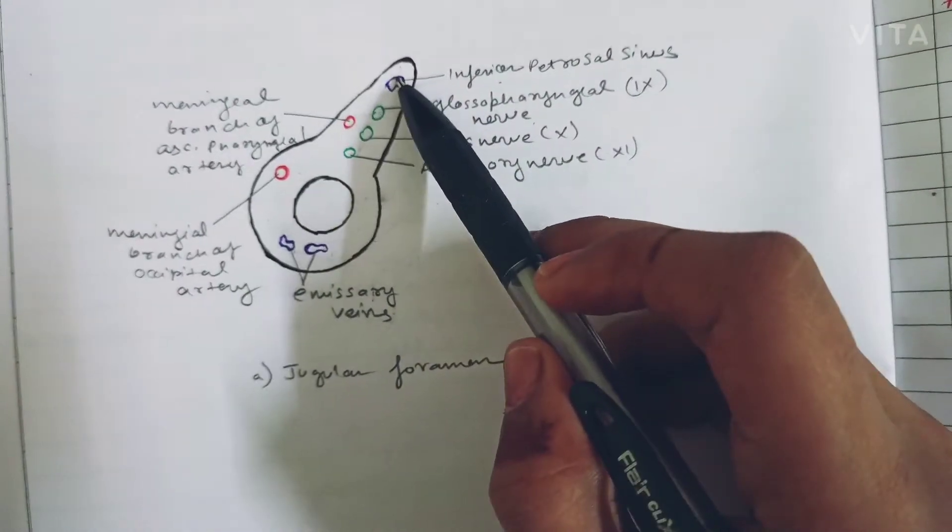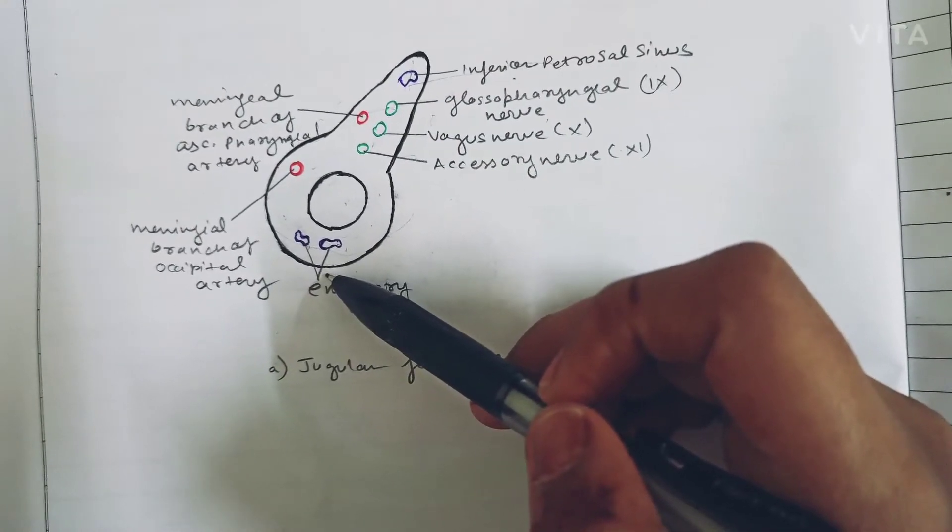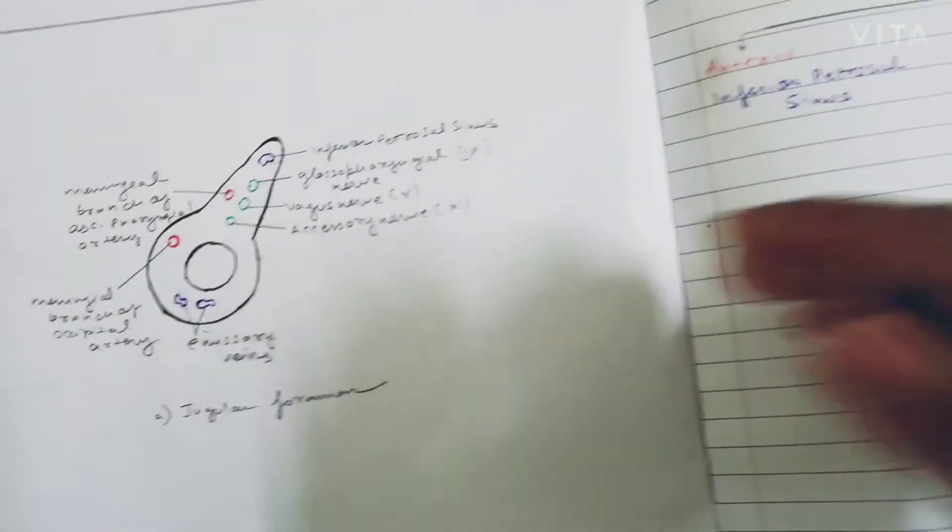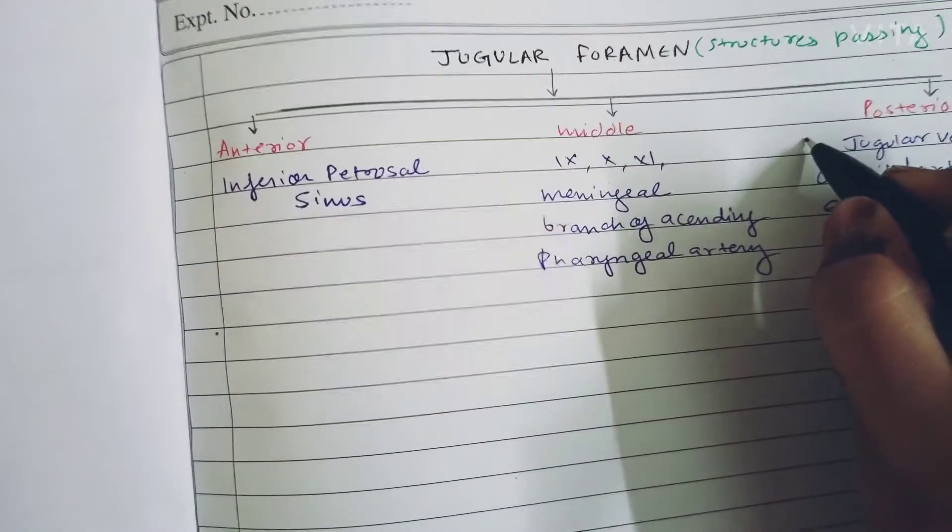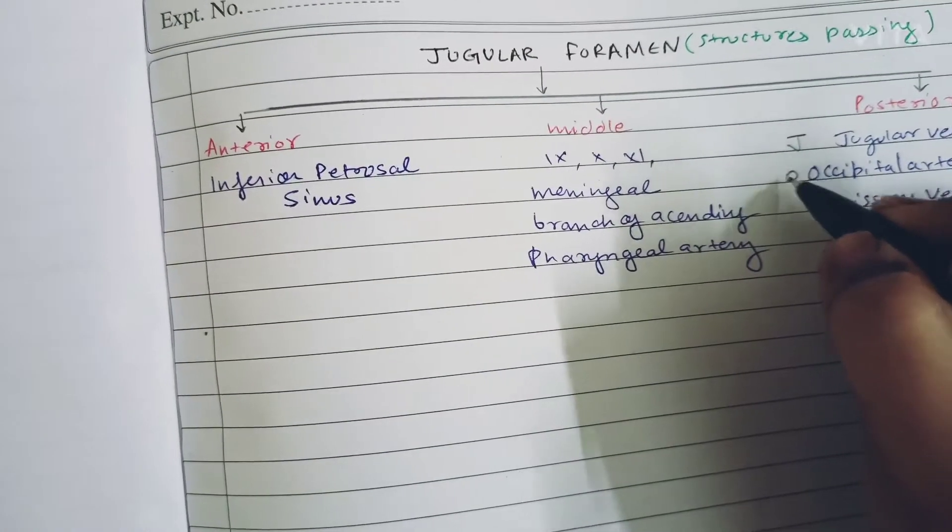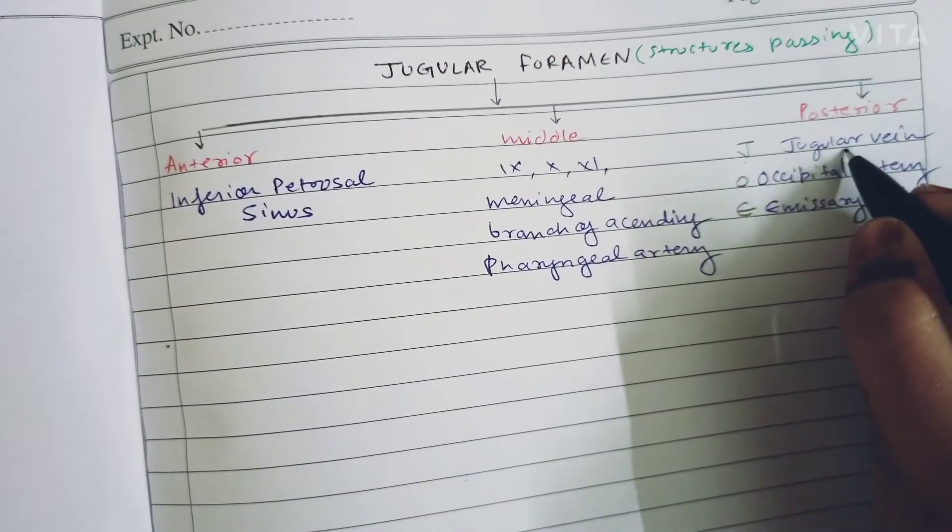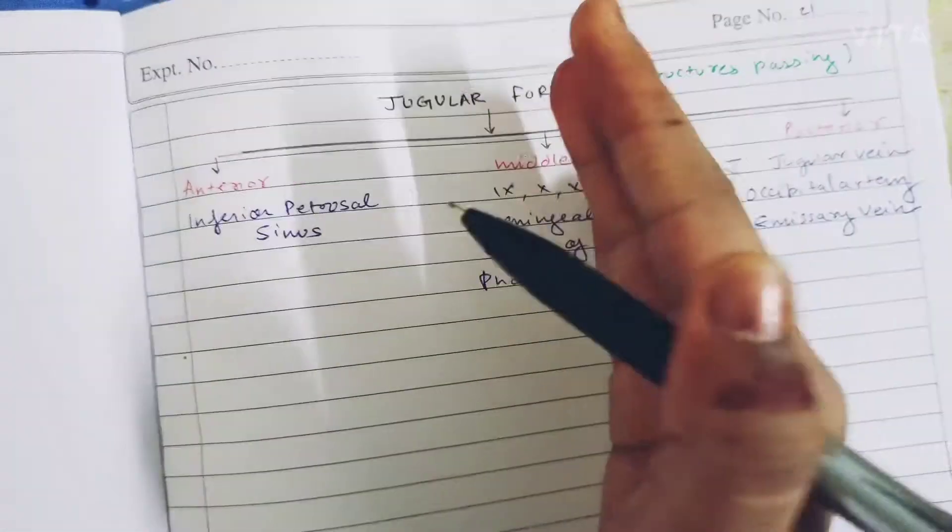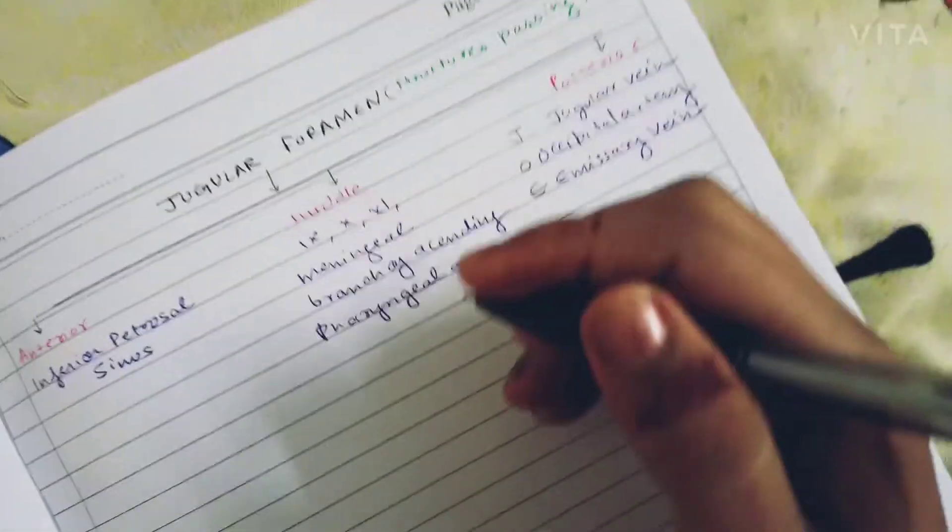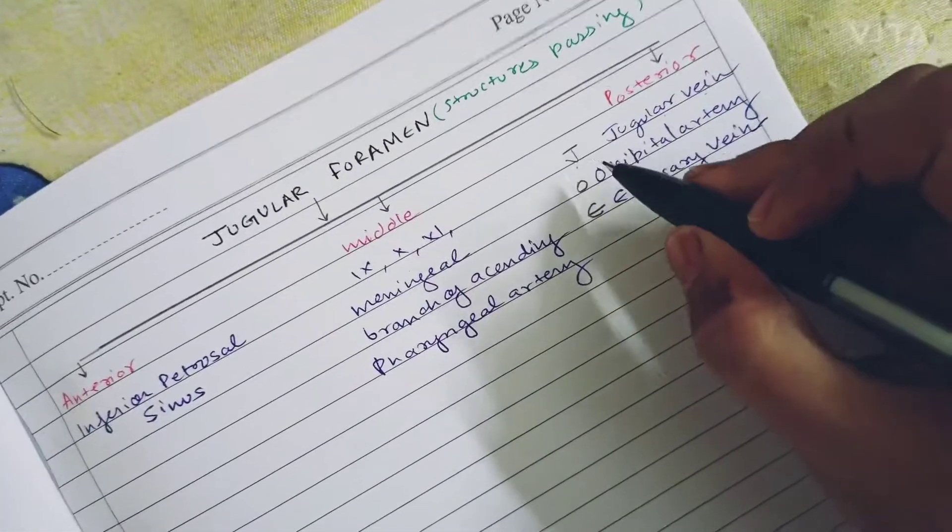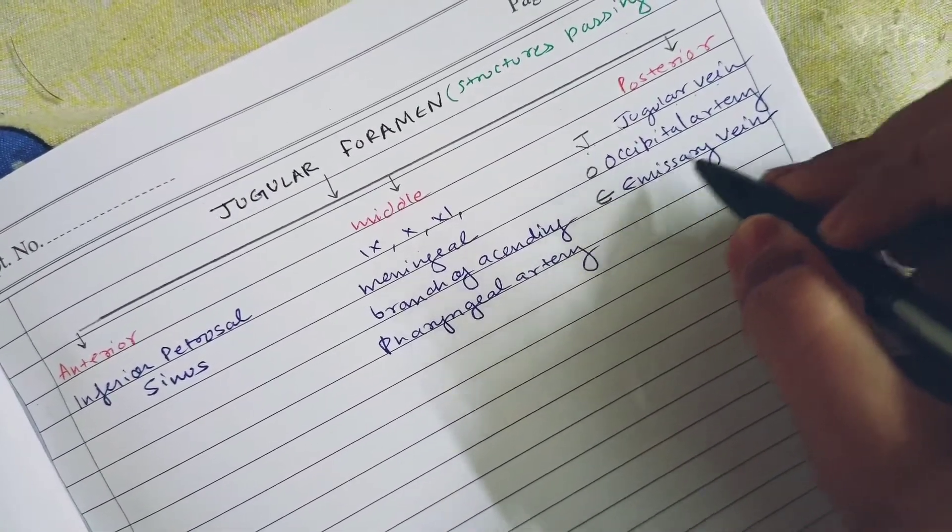Let's see the trick. There is some boy called Joe. J stands for jugular, so we will start from posterior, then middle, and then come to anterior. Joe: J is for jugular vein, O is for occipital artery, E is for emissary vein.